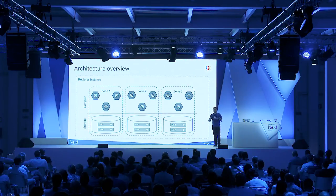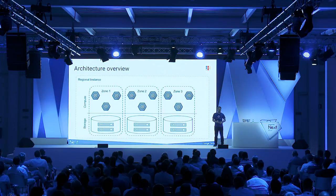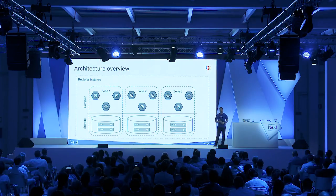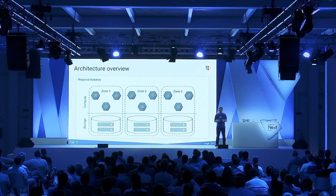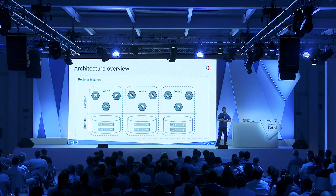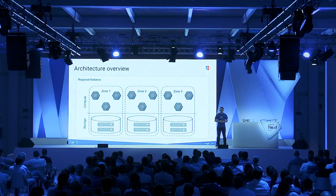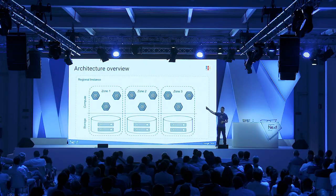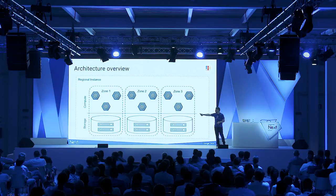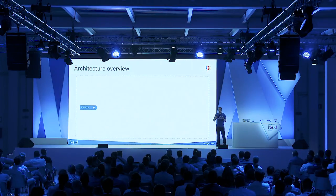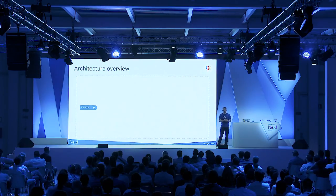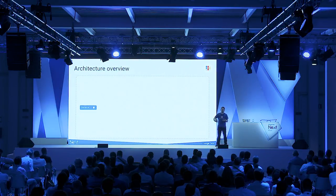I want to look at how Spanner actually achieves horizontal scalability and the ability to grow to terabytes and petabytes while handling large read and write loads. The way Spanner does this is a separation of compute versus storage. Here's an example of a regional setup: when you buy three nodes, you actually get nine nodes behind the scenes — all three are replicated three times across three zones, with storage replicated as well.